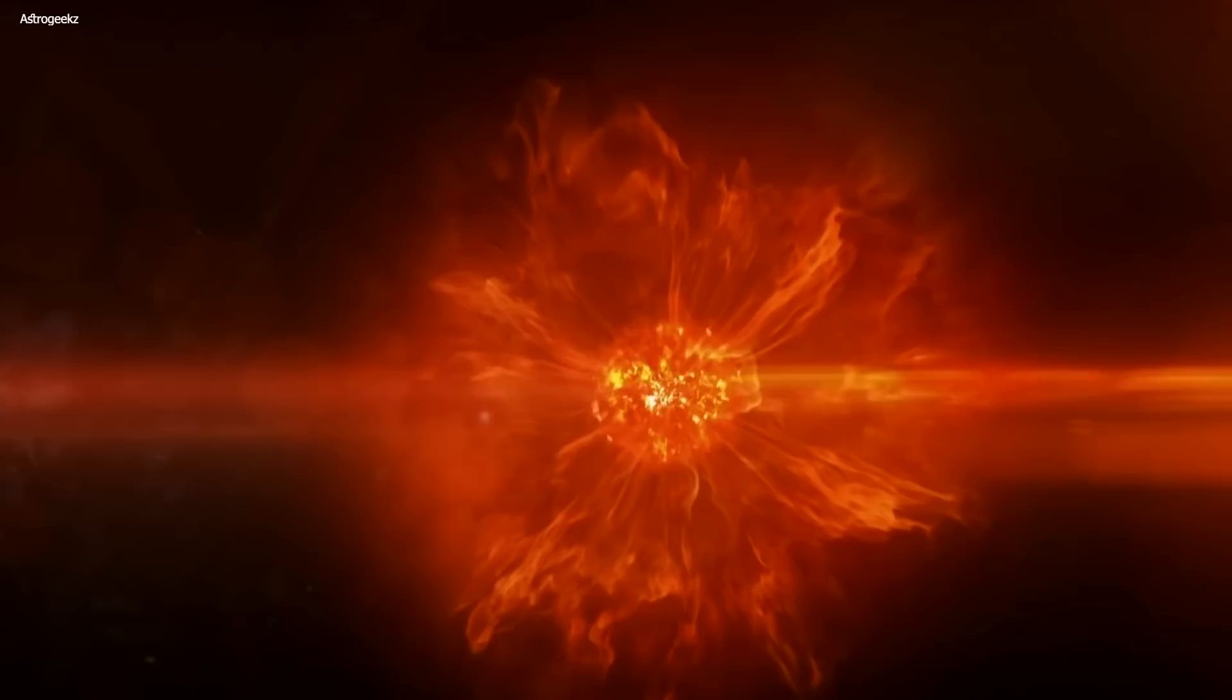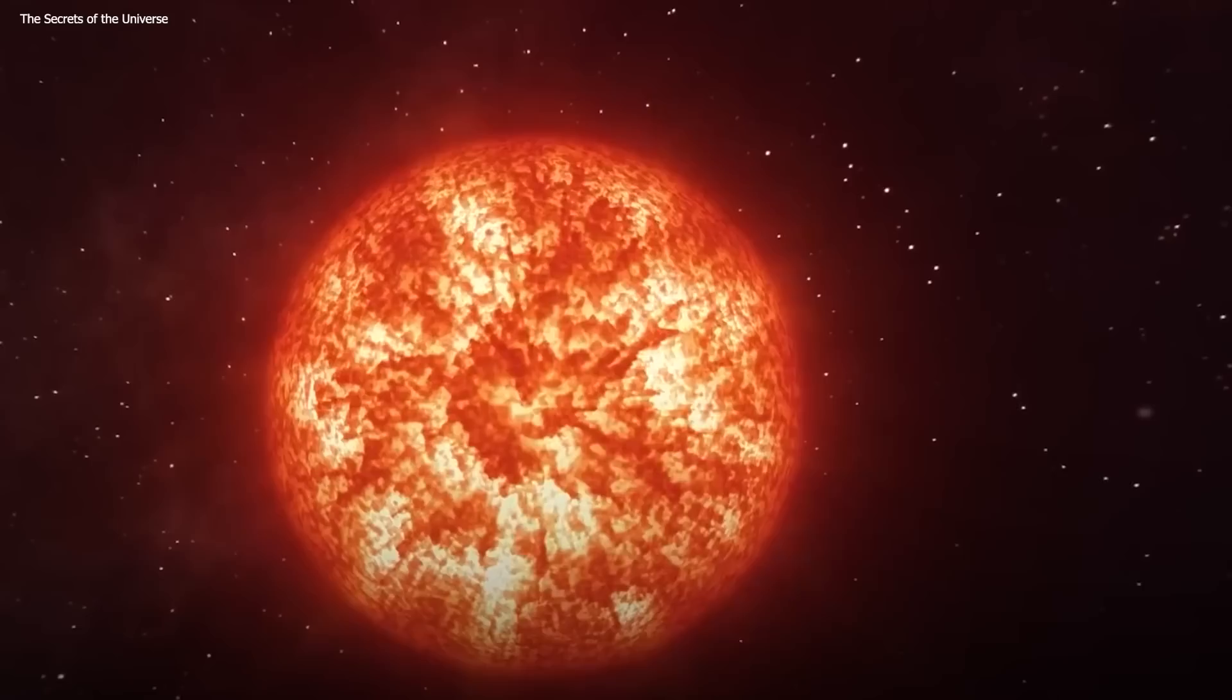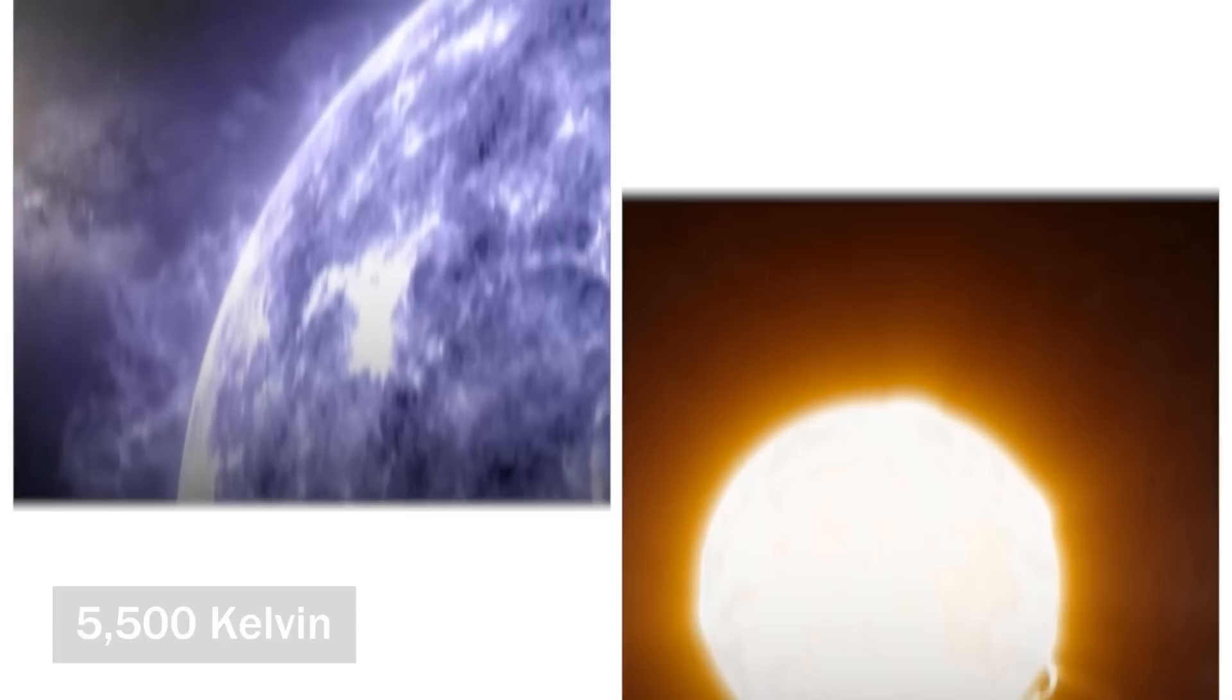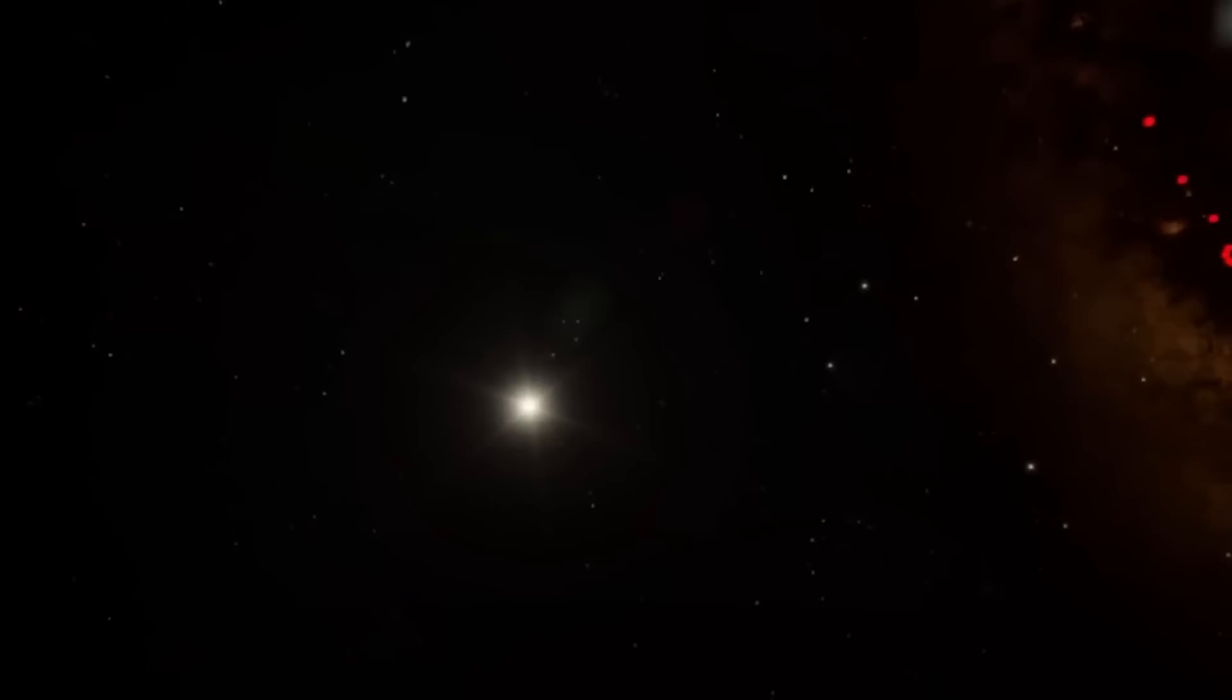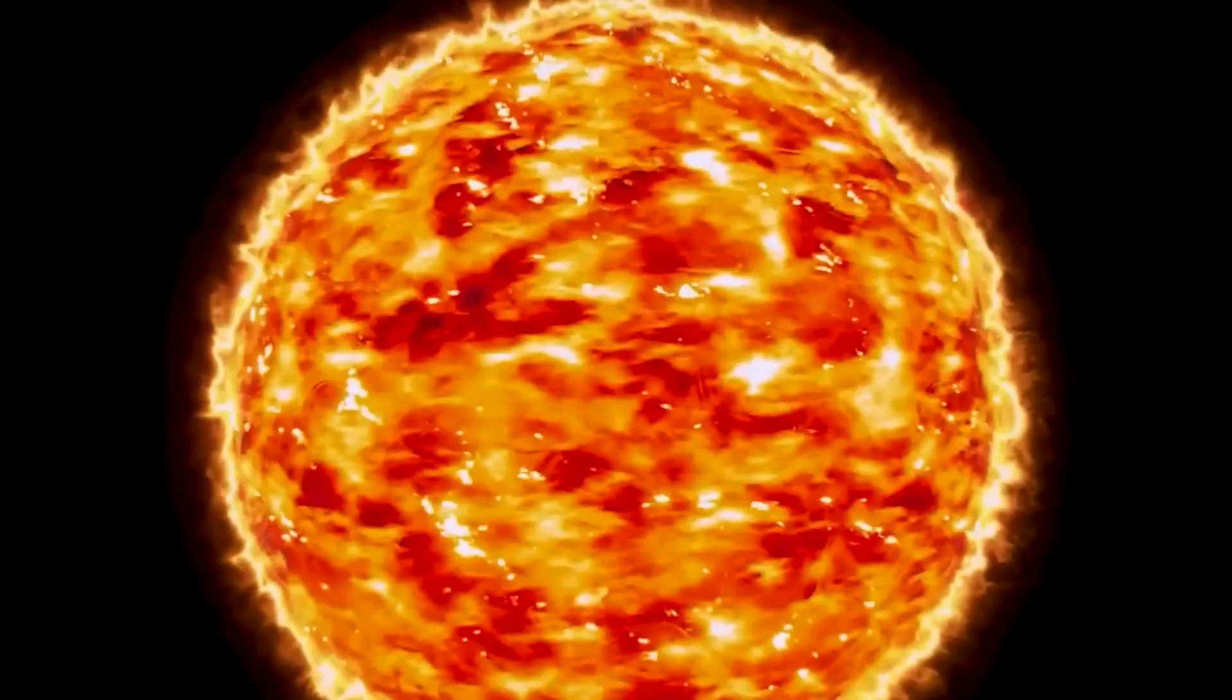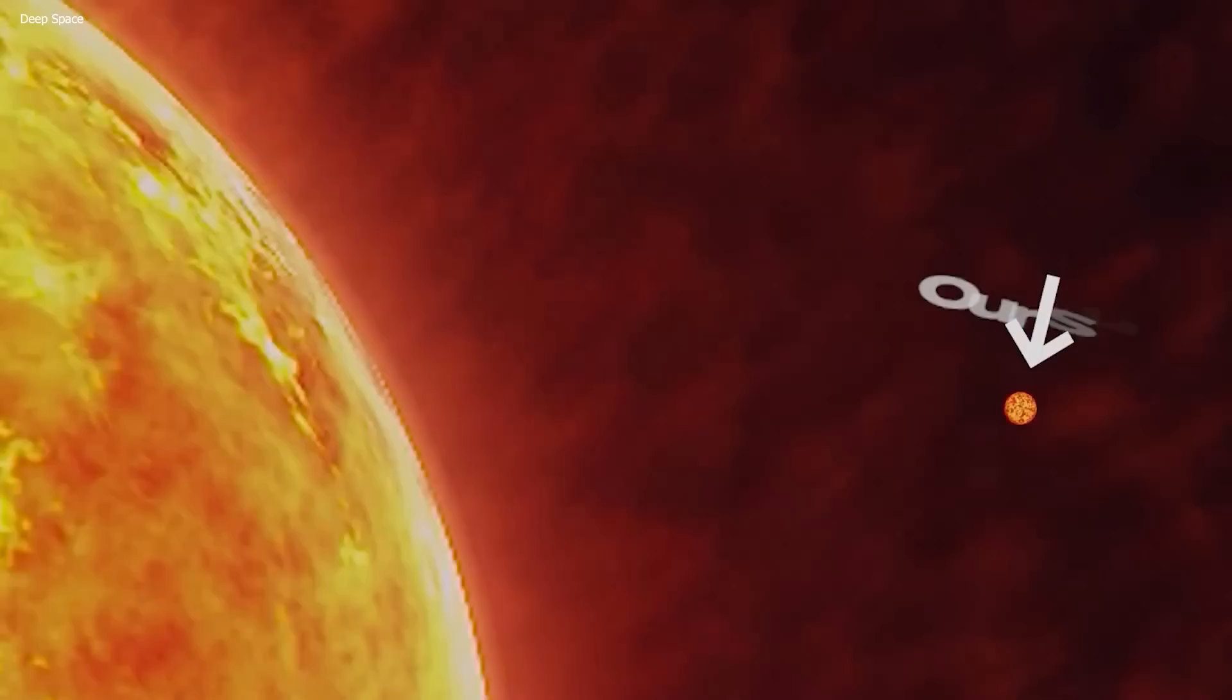But brightness isn't the only thing it's known for. Betelgeuse's distinctive reddish color is due to its cool surface temperature of around 3,500 Kelvin, which is much cooler than our sun's surface temperature of 5,500 Kelvin. This lower temperature also means that Betelgeuse emits much less energy per unit of surface area than the sun, which is why it appears much dimmer, despite being one of the largest stars known to us. It's like the giant who's happy to be low-key and doesn't need to show off their size to feel important. But don't let Betelgeuse's laid-back nature fool you. It's still a supergiant star that's around 20 times more massive than our sun.